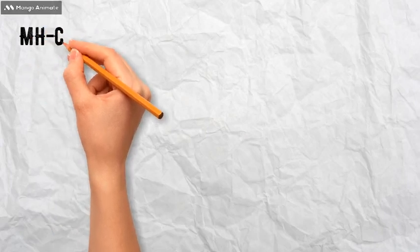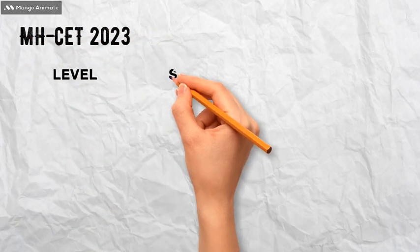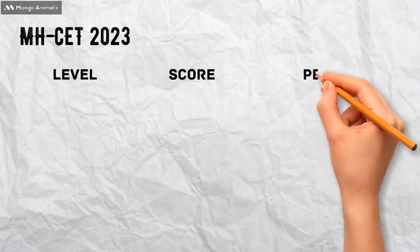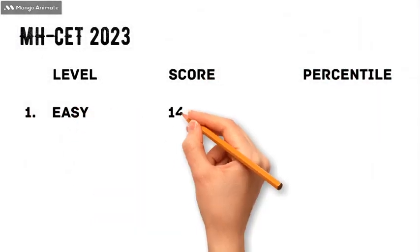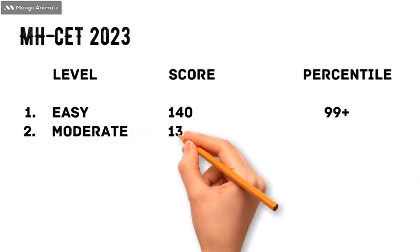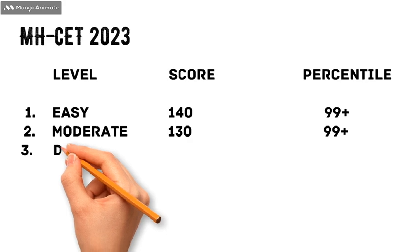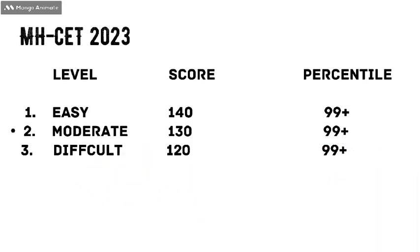Now before we start, let's have a look at last year's marks versus percentile data. So last year, in easy shifts, we had 99 percentile on a score of 140 marks. For moderate shifts, the 99 percentile was on 130 marks. And in some difficult shifts, we got 99+ percentile on a total score of just 120 marks.